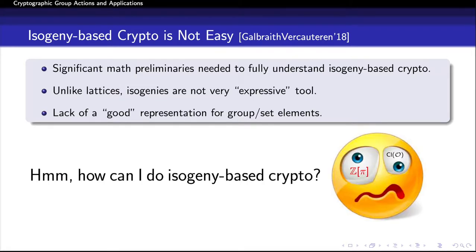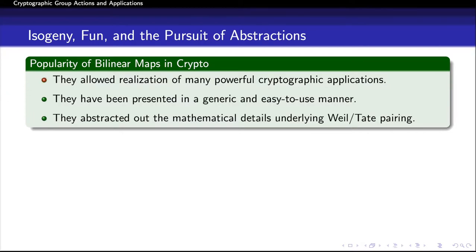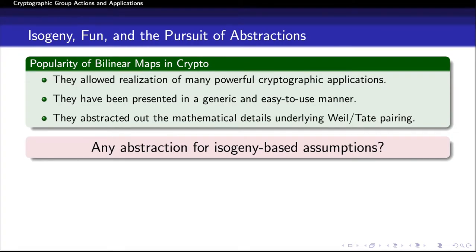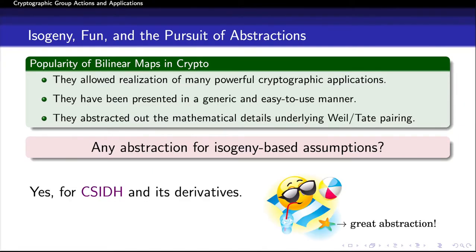The question is, given these difficulties, can we hope for easier ways to do isogeny-based crypto? If we look at the history of cryptographic assumptions, pairings have had a kind of similar situation. Bilinear maps became popular in crypto in part because they allowed realization of cryptographic primitives while being presented in a generic and easy-to-use manner, and they abstracted out mathematical details underlying the Weil or Tate pairing. Therefore, the question we are going to answer is: is there any simple abstraction for some isogeny-based assumptions? We positively answer this question by providing an abstract framework that captures a well-known isogeny-based assumption called CSIDH and its derivatives.